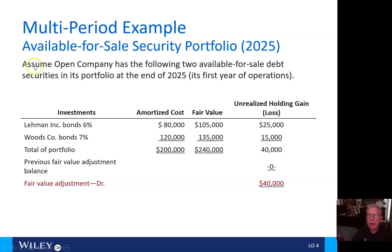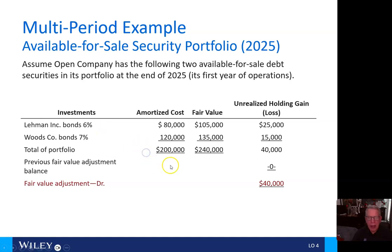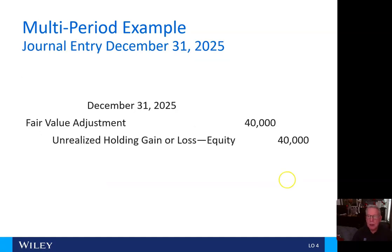If we assume Open Company has the following two available for sale debt securities in its portfolio at the end of 2025, its first year of operations, it had these bonds with their fair values and unrealized holding gains — in this case, a holding gain. So we make a fair value adjustment: a debit to fair value adjustment and a credit to unrealized holding gain or loss — equity — for $40,000.